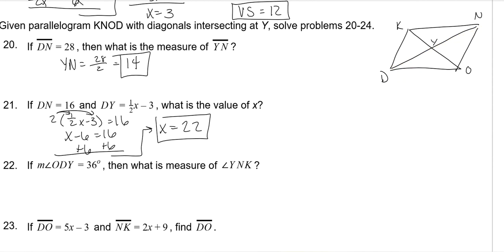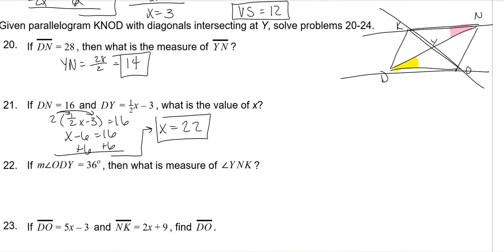Angle ODY and angle YNK: this is a parallelogram, which means these are parallel lines cut by a transversal. So those angles are alternate interior angles and are congruent. The measure of angle YNK is 36 degrees also.